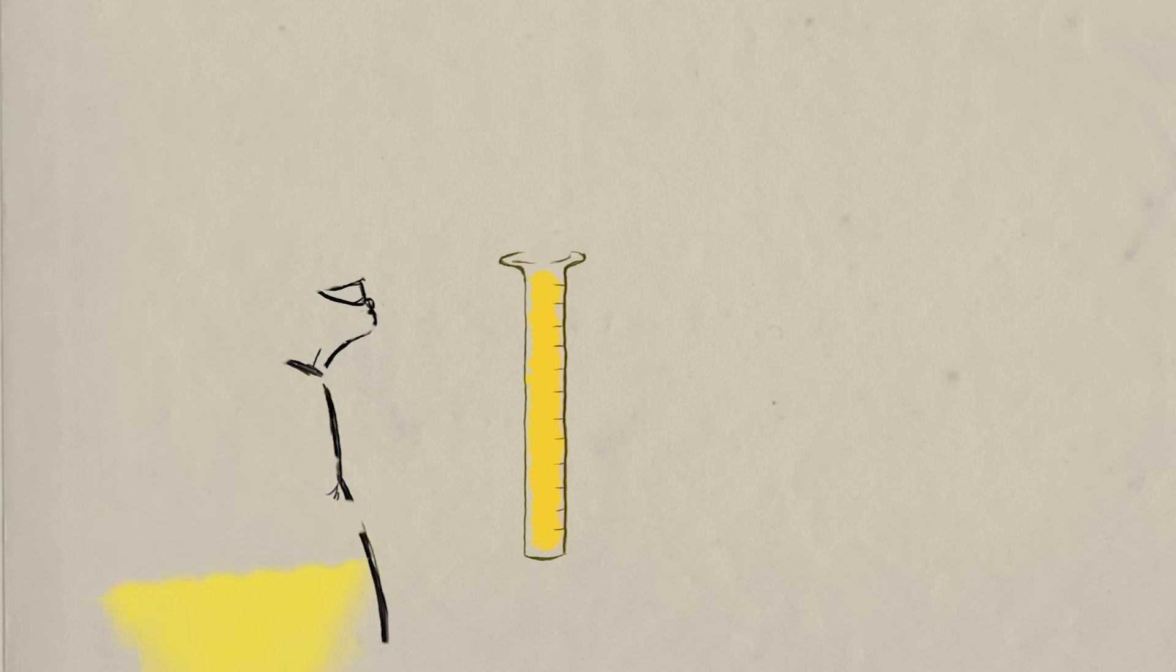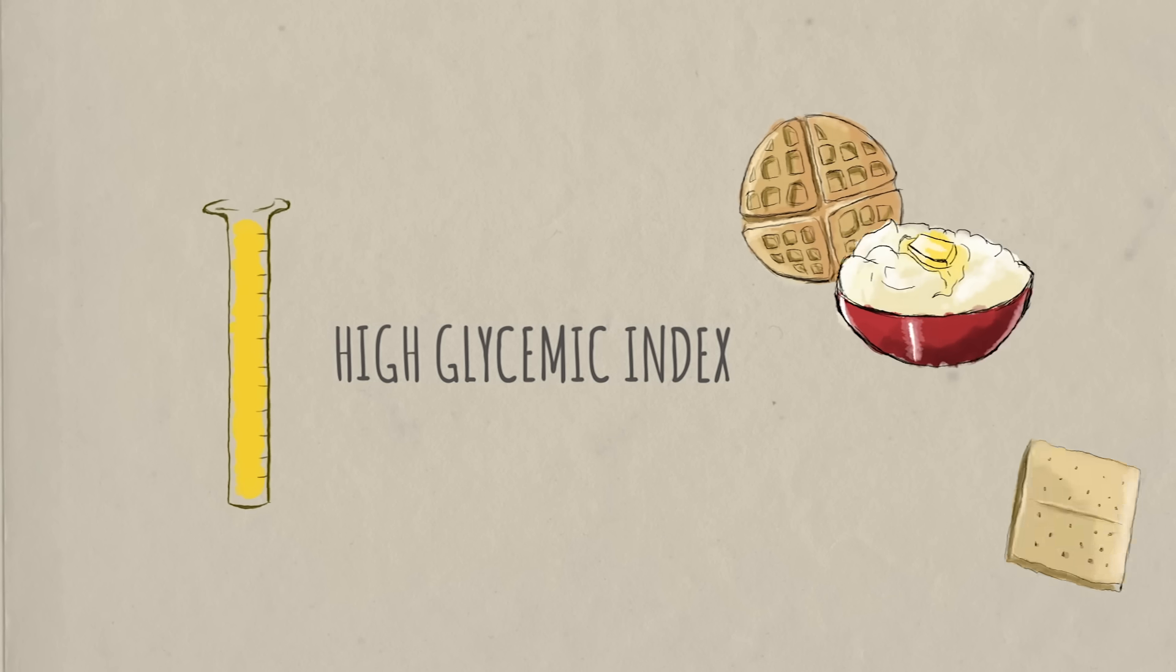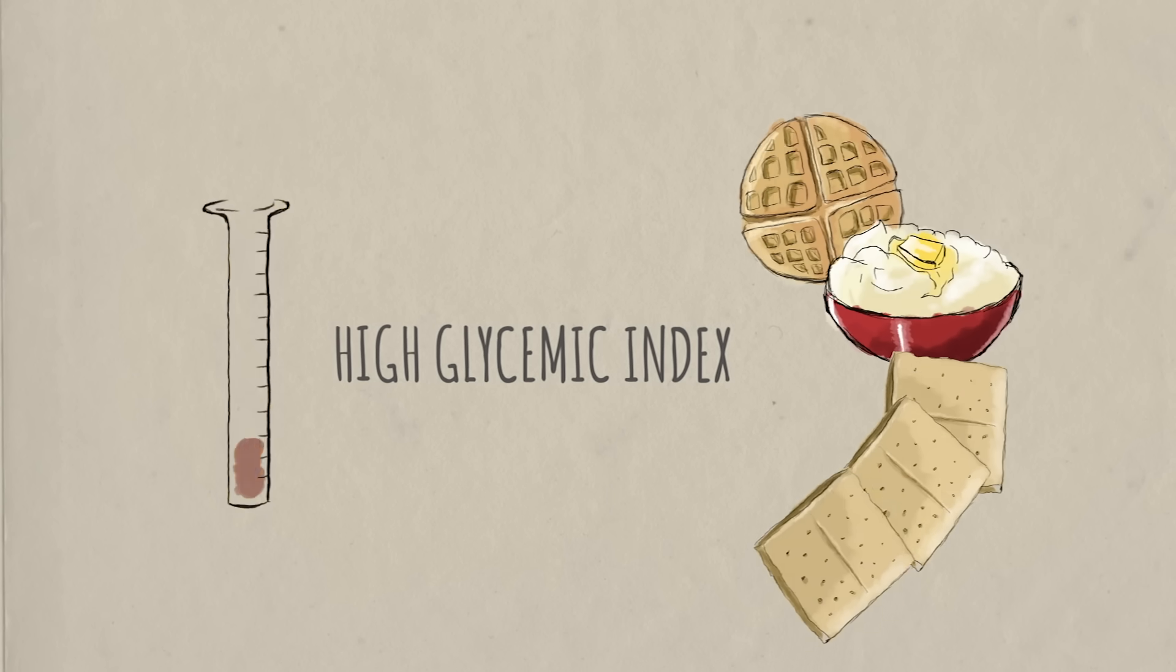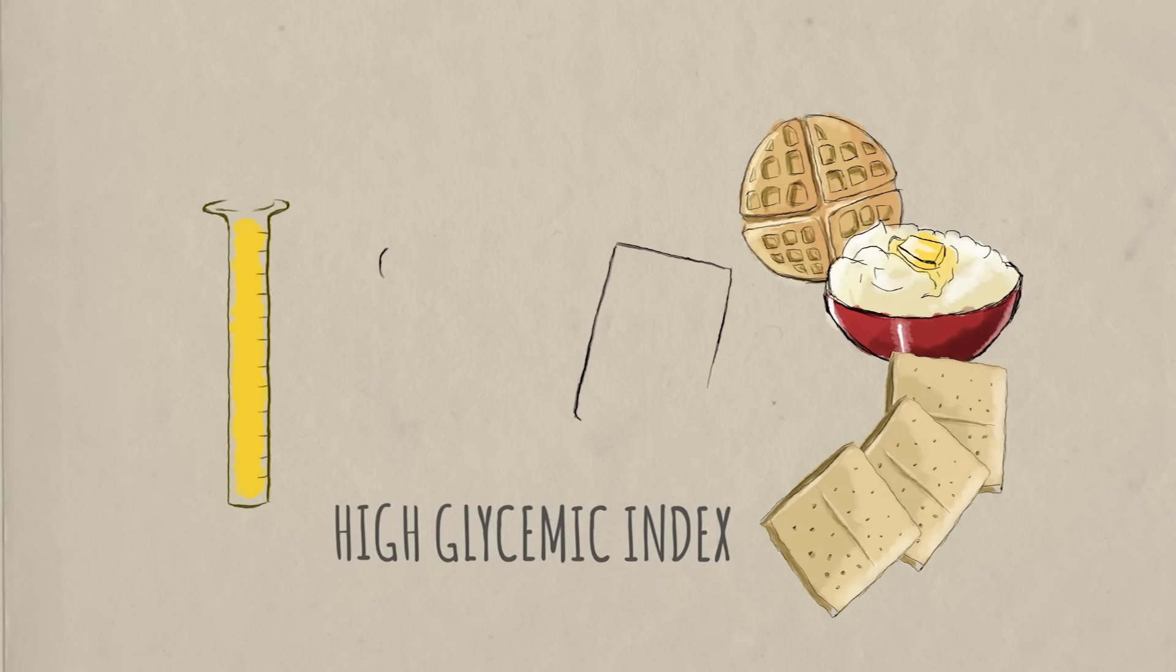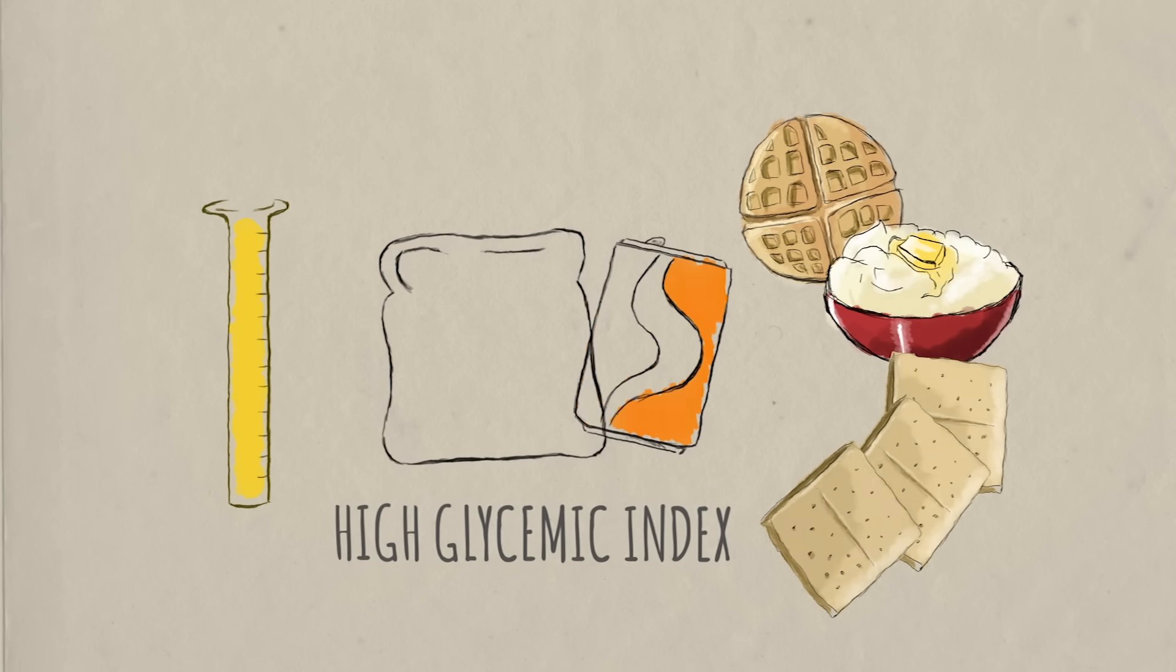These foods have a high glycemic index, the amount that a particular food raises the sugar level in your blood. Soda and white bread have a similar glycemic index, because they have a similar effect on your blood sugar.